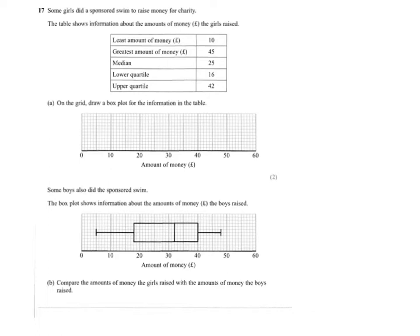We'll start with the least amount — that's 10. So we'll draw a whisker there at the end. The greatest amount of money was 45; that's pretty straightforward to plot, halfway between 40 and 50. The median is at 25.